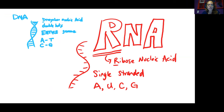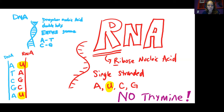The other thing to remember is that RNA has four bases: adenine, uracil, cytosine, and guanine. The key thing to pay attention to is that there is no thymine in RNA. So instead of pairing a T with an A, you're going to pair a U with an A. Make sure you're keeping up with that particular difference.